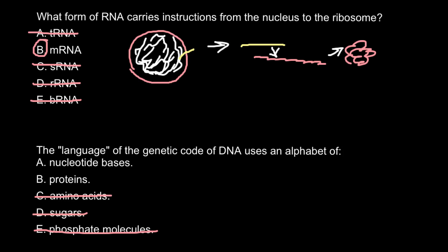We're left with only two answers, A and B. Proteins. Proteins are not the alphabet of DNA; this is a product of DNA. Twenty amino acids are a product of DNA, so we can cross out this answer.